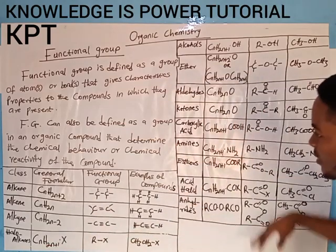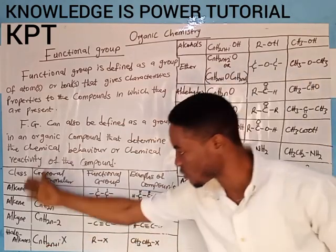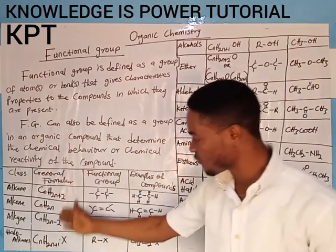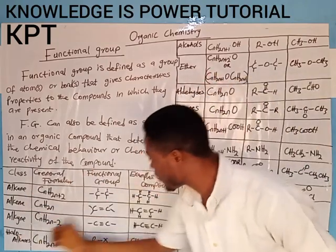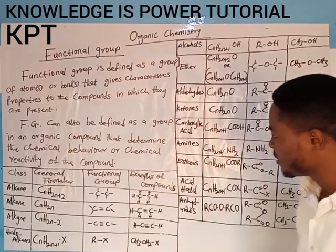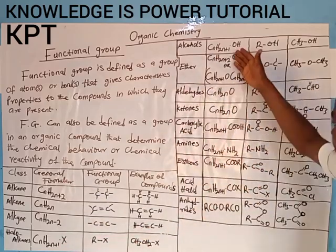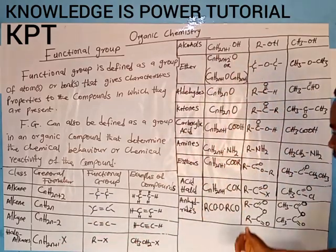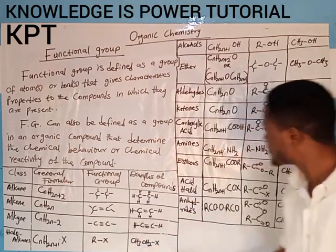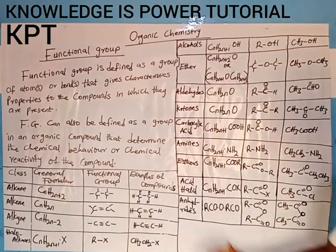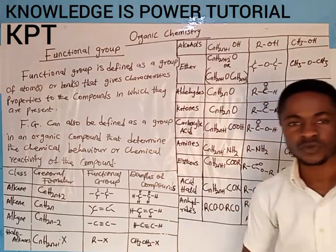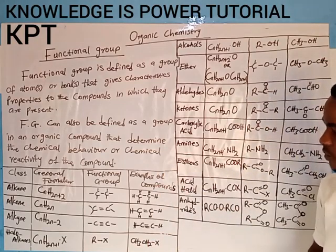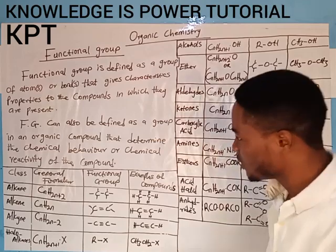The table I have here simply illustrates the classes of organic compounds, the general formulas of organic compounds, the functional groups in question, and finally the good examples of organic compounds that fall into these functional groups we are talking about. Very important that we understand that.